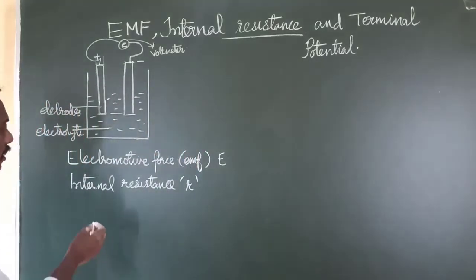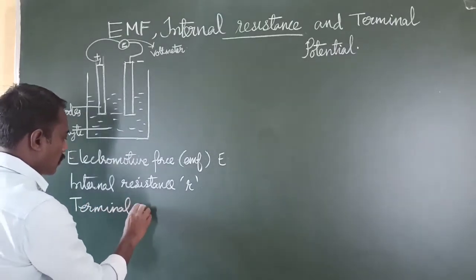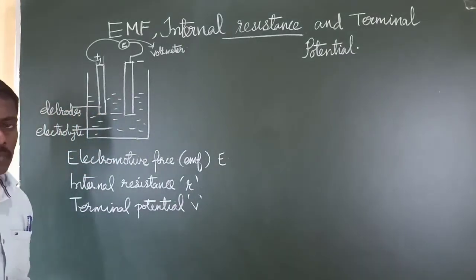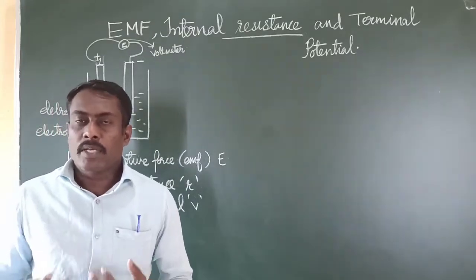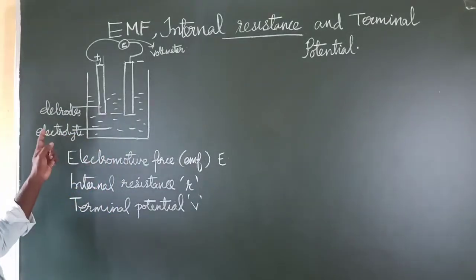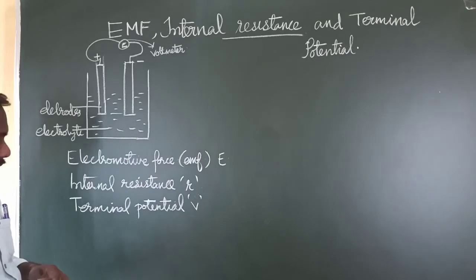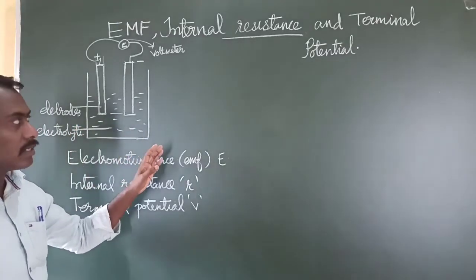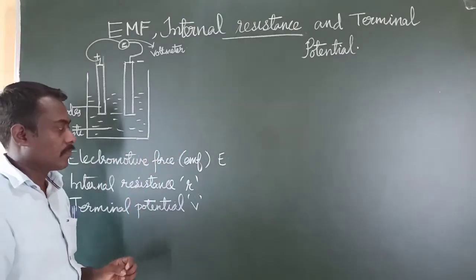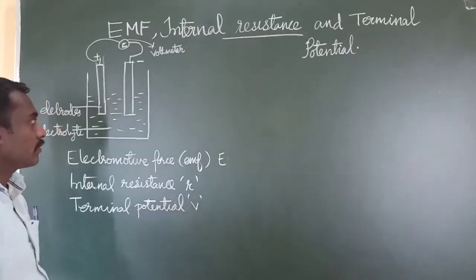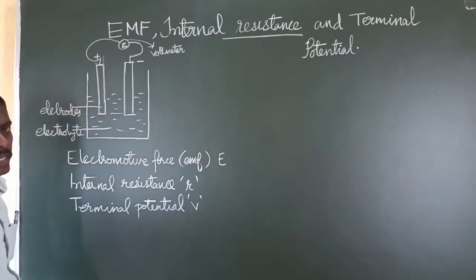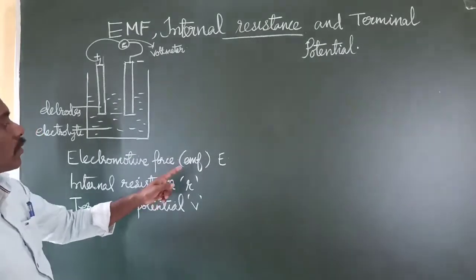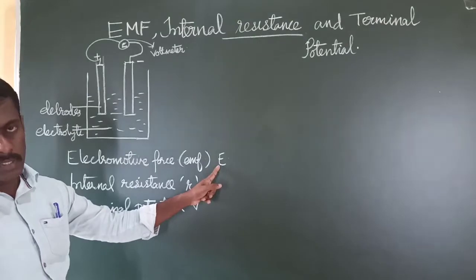Next, let us see what is terminal potential. Terminal potential is denoted by the letter V. Terminal potential is the potential difference between the two electrodes of a cell when a current is drawn from it — that is, when it is a closed circuit. When this cell is connected to an external circuit, the potential difference between these two electrodes will be slightly less than that of the electromotive force or EMF.